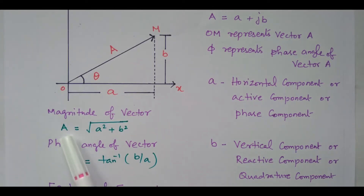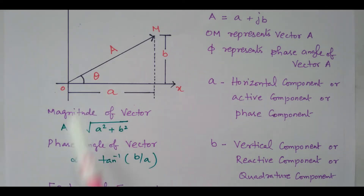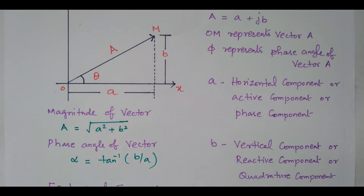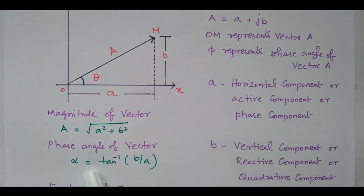So that gives the magnitude. Similarly, the angle alpha — alpha and theta are both the same — is tan inverse B by A, that is the imaginary term divided by the real term. So this is called the rectangular form and this is the polar form.